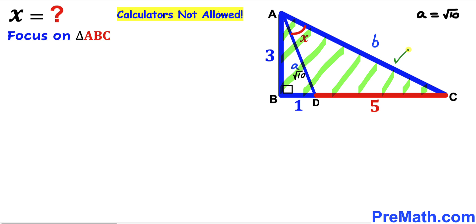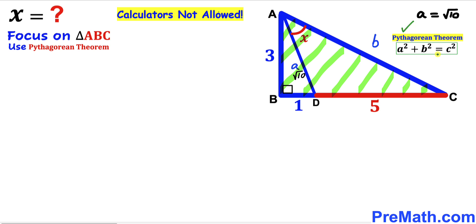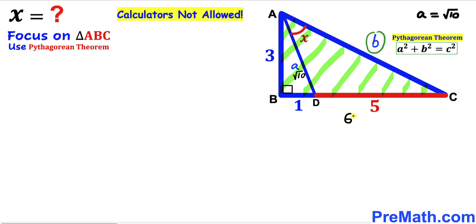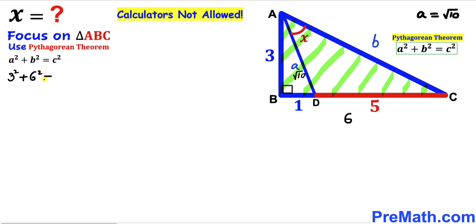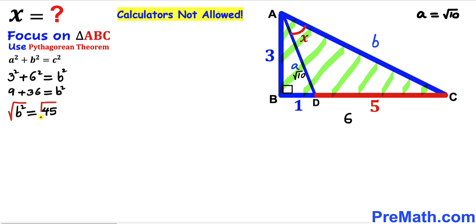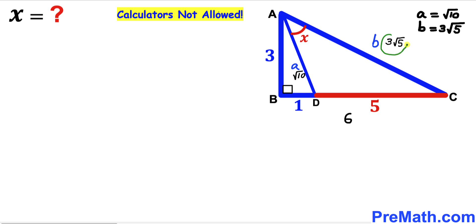Now we focus on the big right triangle ABC and apply the Pythagorean theorem again. We observe that the whole side BC is 1 + 5 = 6, so the hypotenuse is lowercase b and the two legs are 6 and 3. Filling in: 3² + 6² = b², so b² = 45, and taking the square root gives b = 3√5.